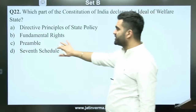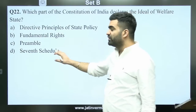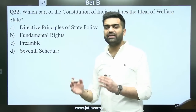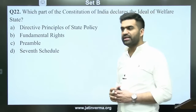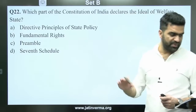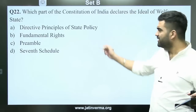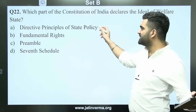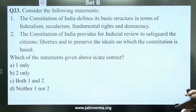Sometimes all options seem confusing — the Preamble mentions some things, and the 7th Schedule (Union List, State List, Concurrent List) also contains related provisions. However, the simple answer is Directive Principles of State Policy. The 7th Schedule lists are Union List, State List, and Concurrent List.